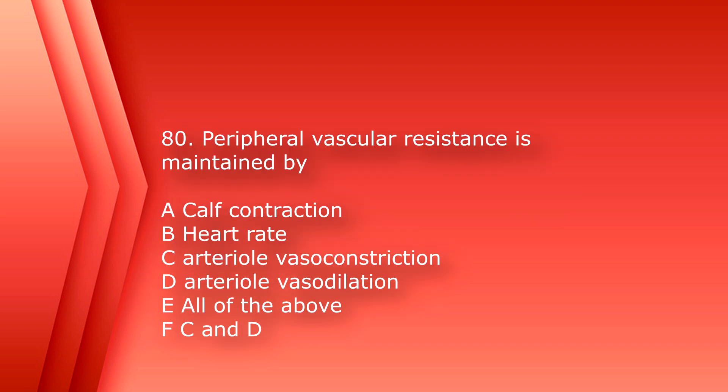Number 80: peripheral vascular resistance is maintained by A. Calf contraction. B. Heart rate. C. Arterial vasoconstriction. D. Arterial vasodilation. E. All of the above. Or F. C and D. The answer is F — C and D.